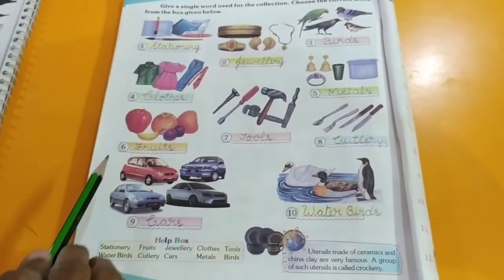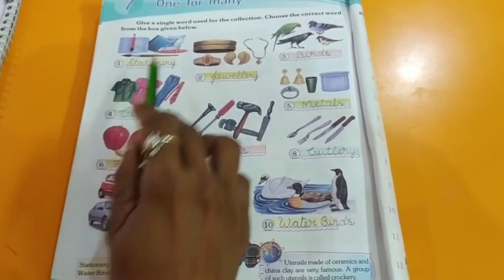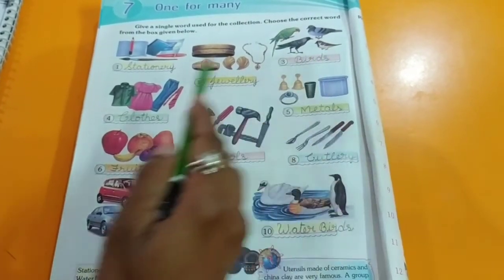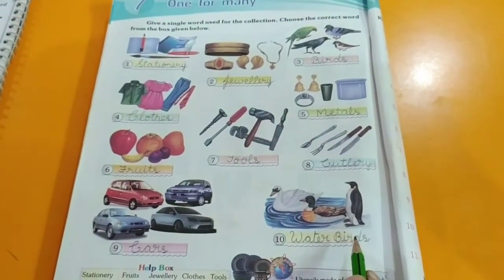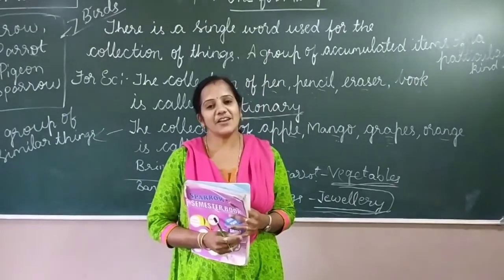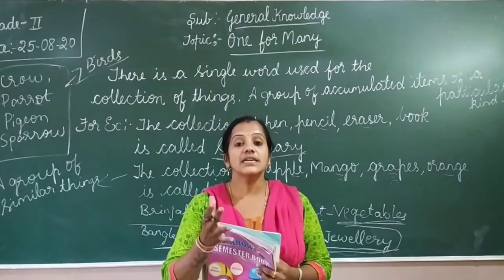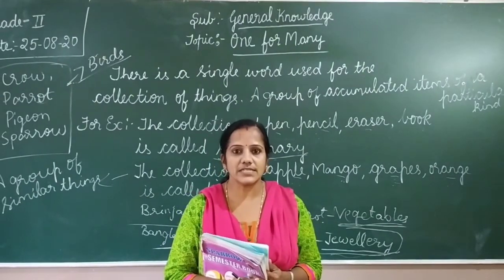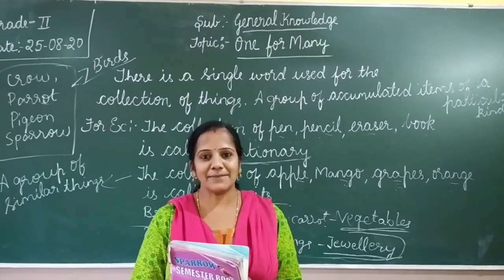So like this, there is a single word used for the collection of a particular kind. Write neatly in your textbook. Now you all have understood — we give a single word for a collection of a particular kind. Write neatly the textbook exercises. Here I am winding up the session. Take care, bye.